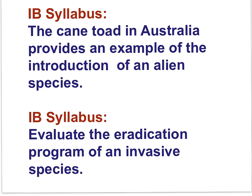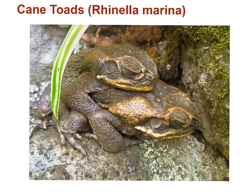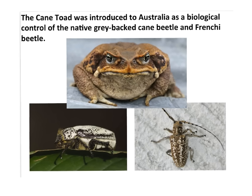The IB syllabus also uses the cane toad in Australia as an example of the introduction of an alien species, and asks us to evaluate the eradication program of an invasive species. The cane toad, native to South America, is an invasive species in various locations around the world, including Australia. Australia's relative isolation means there are no natural predators for the cane toads. Cane toads were introduced to Australia from Hawaii in 1935 as a biological control mechanism to control the native gray-backed cane beetle and the Frenchie beetle. Competitive exclusion and the absence of predators has led to reduction in the numbers of endemic species.